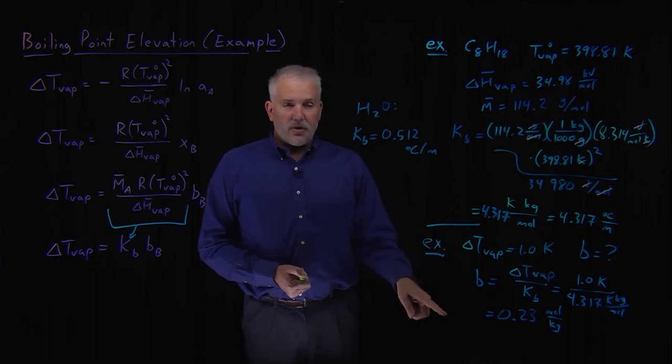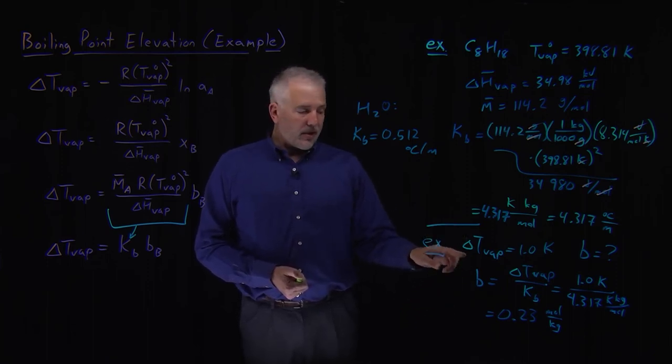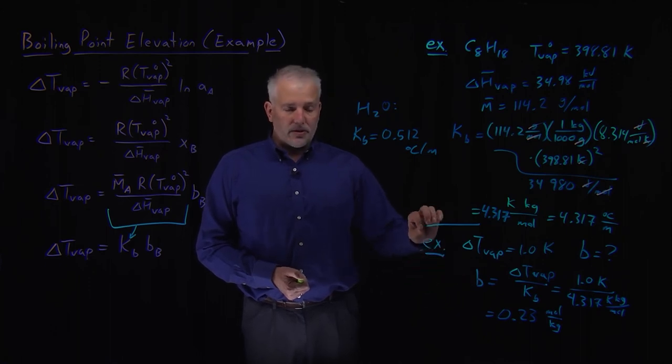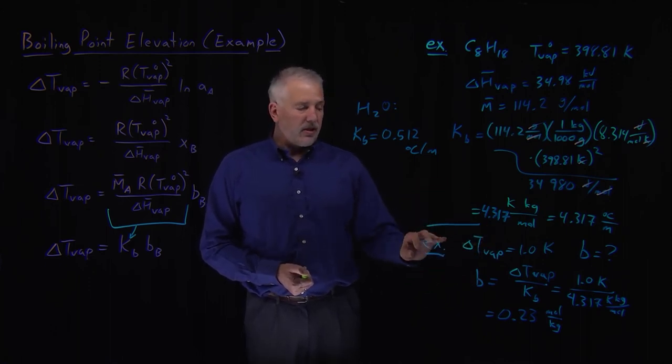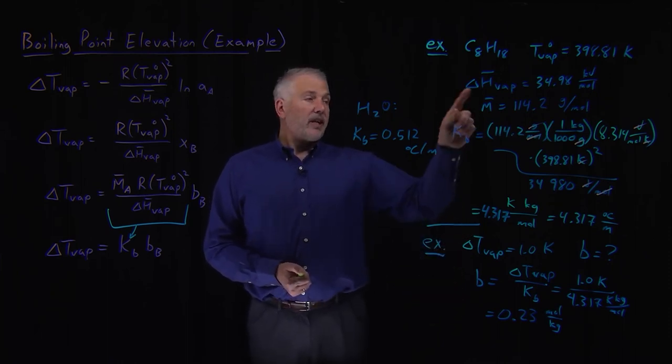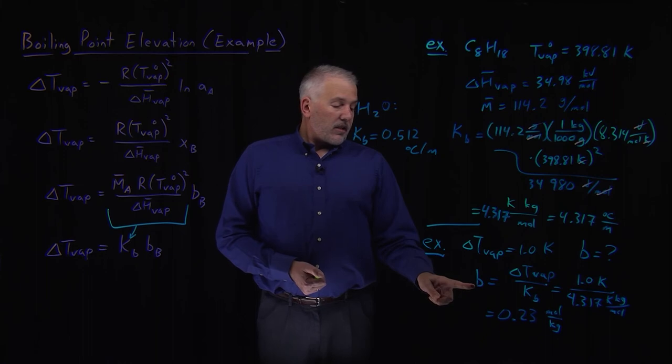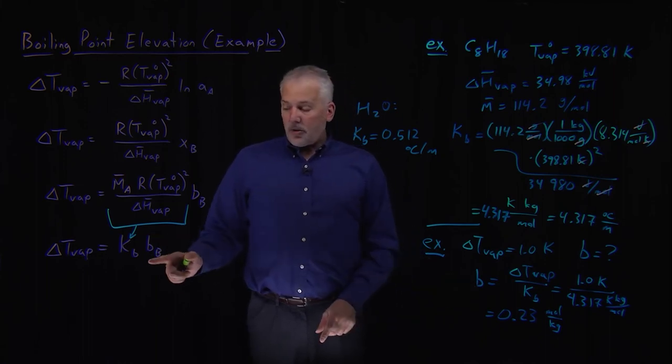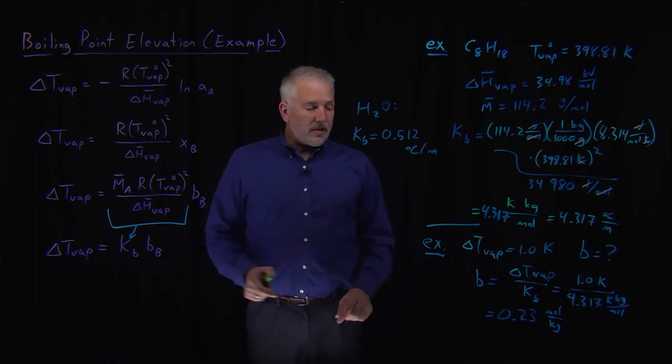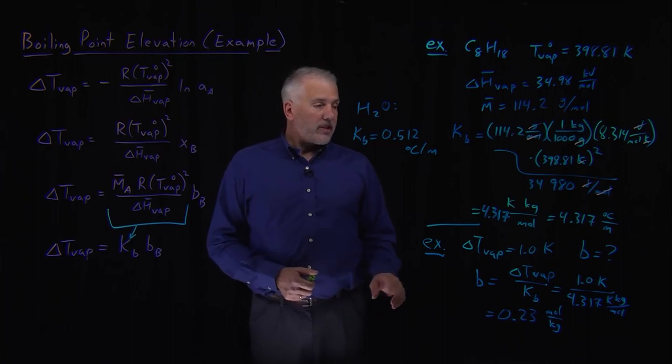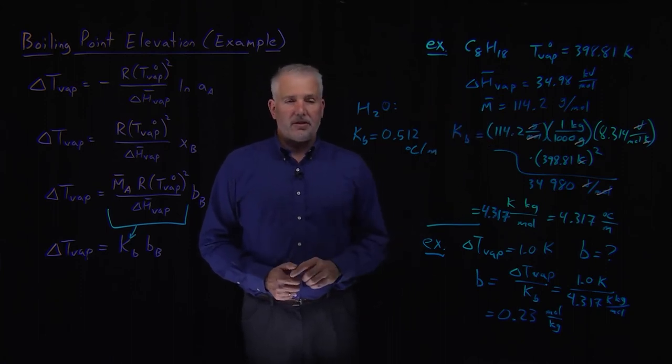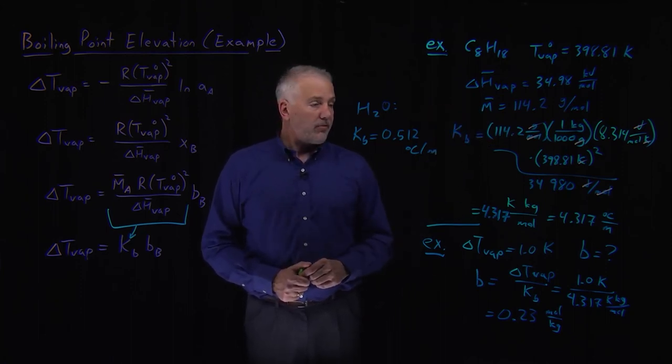Notice that I don't have to tell you what solute I'm using to elevate the boiling point of octane. It doesn't matter whether I dissolve sugar in octane, or whether I dissolve a little bit of ethanol in the octane, or a little bit of water in the octane. It doesn't matter what solute I try to dissolve in the octane. The concentration of the solute, all I need to know is the concentration, not the identity of it. The amount of the boiling point elevation is a property of the solvent, not the solute, like with all colligative properties.